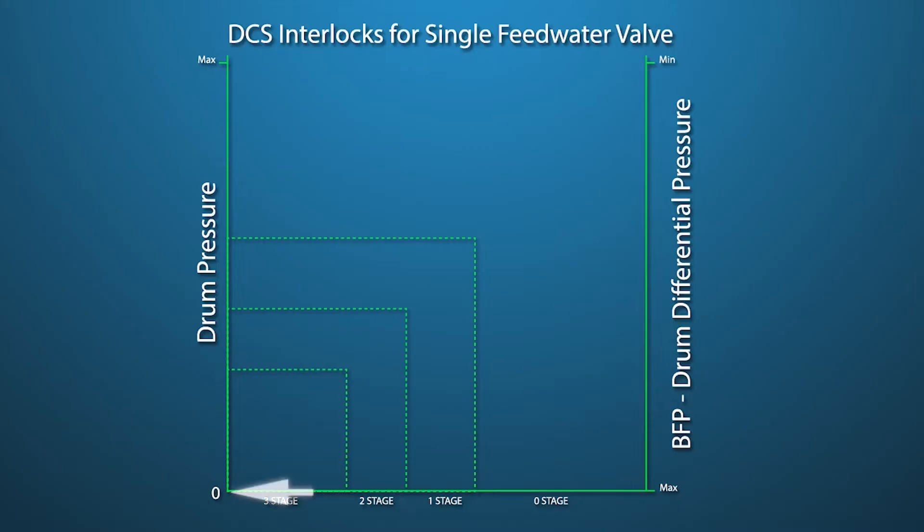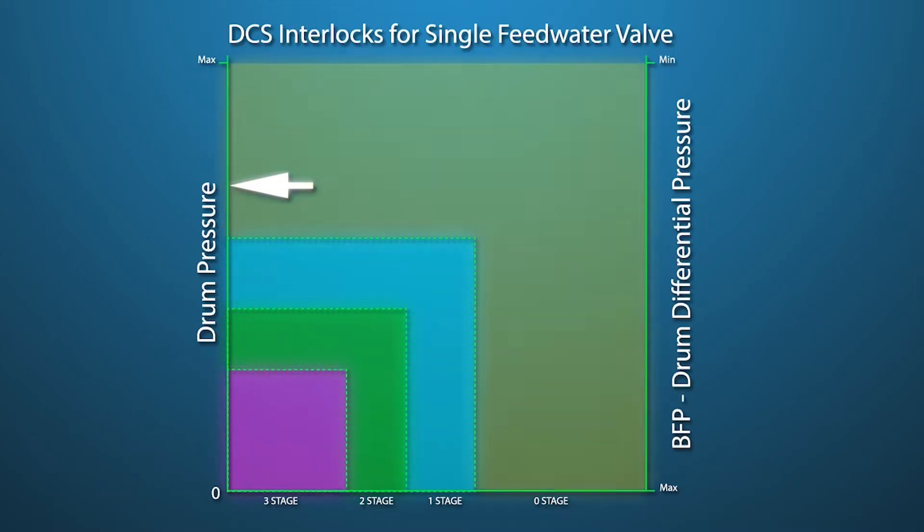This example shows valve stage operation limited by drum pressure. As drum pressure rises, additional valve stages will allow increased water flow. At the same time, as differential pressure across the valve drops, its position will increase as allowed by the drum pressure. This will prevent cavitation throughout valve operation.